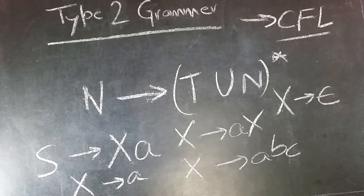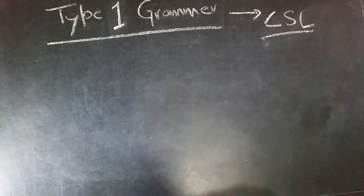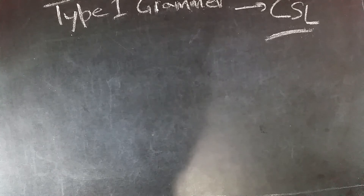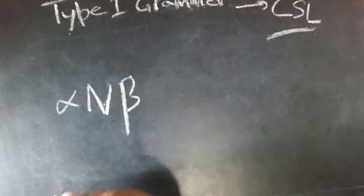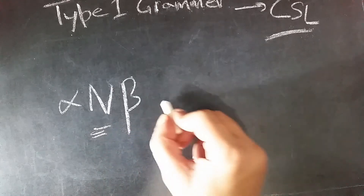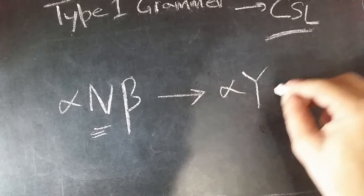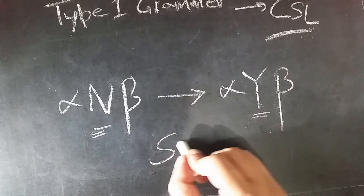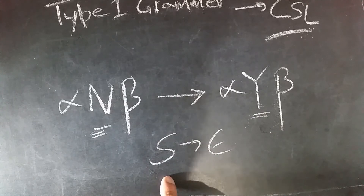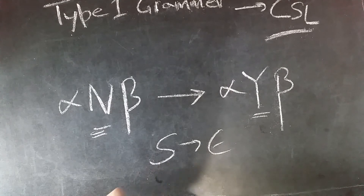Now let's see type 1 grammar. Type 1 grammar generates context sensitive languages. The production must be of the form: a string of terminals and non-terminals — with at least one non-terminal required — produces another string of terminals and non-terminals, where that string must be non-empty. The rule where a non-terminal gives epsilon is allowed only if the non-terminal does not appear on the right side of any rule. The languages are recognized by a linear bounded automata.